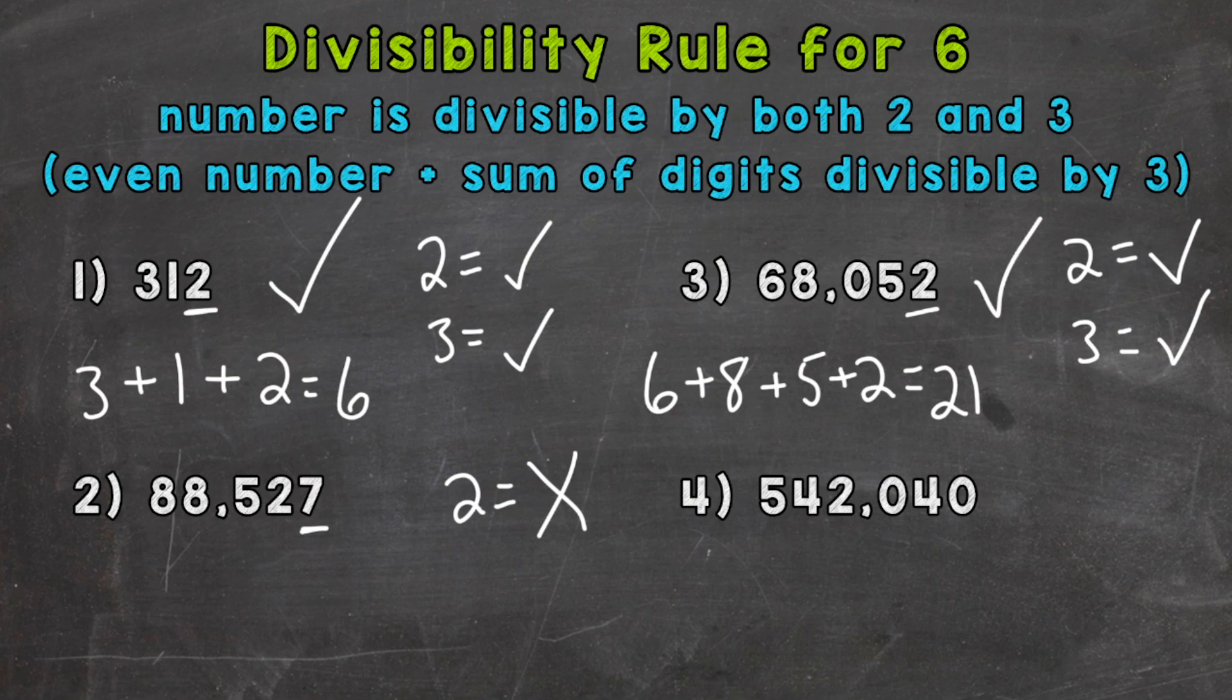So let's move on to number 4 here, where we have 542,040. So let's check to see if it's even. And yes, it ends in a 0, so it's an even number. It's divisible by 2.